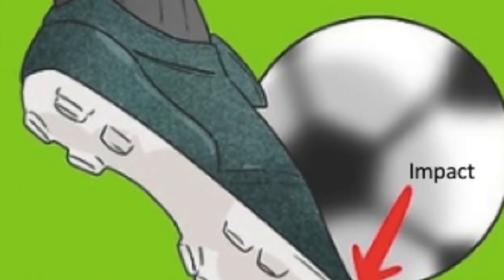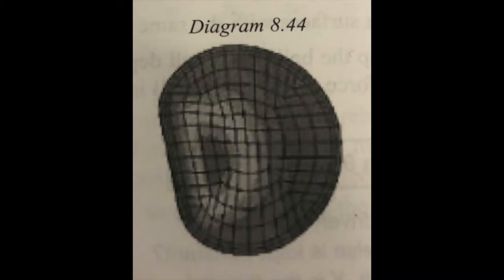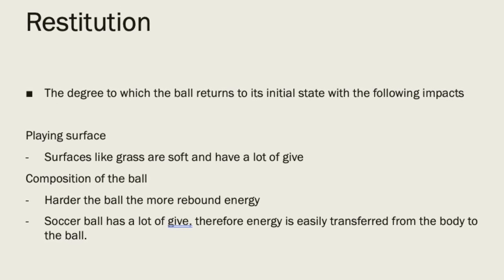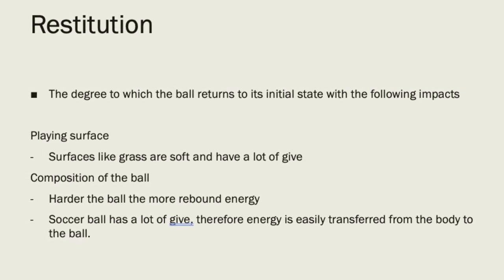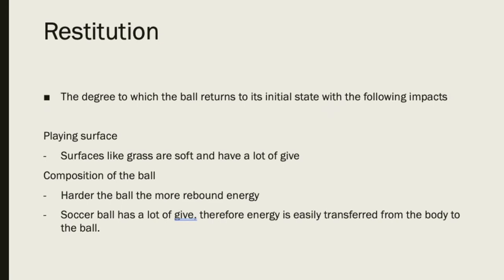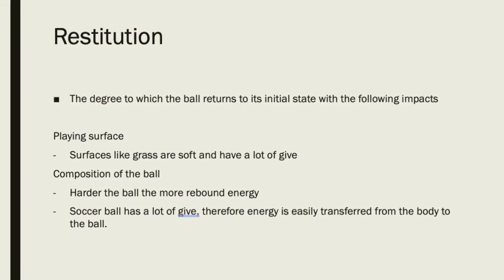Impact occurs when coming into contact with the ball. Elasticity is the ball's ability to compress when the foot makes contact — hugging and rebounding back to its initial state — allowing it to move with forward momentum. The ball's ability to return to its initial state is called restitution. The harder the object, the more rebound energy it will have, propelling it further. As the soccer ball has give, it is not able to reach far distances.